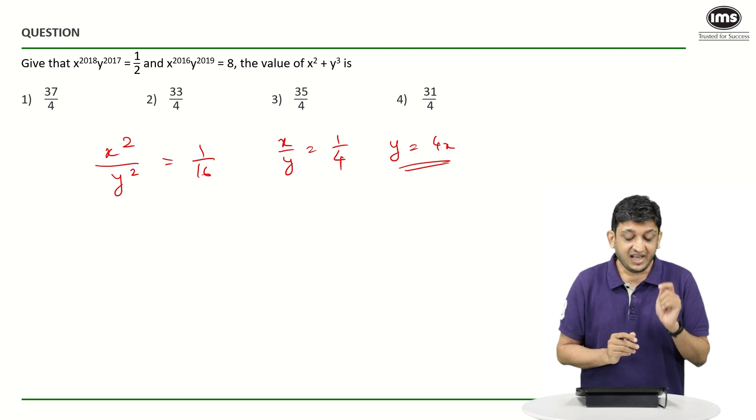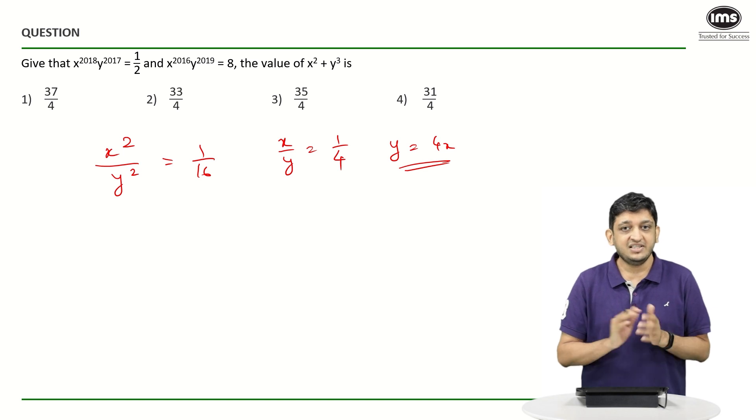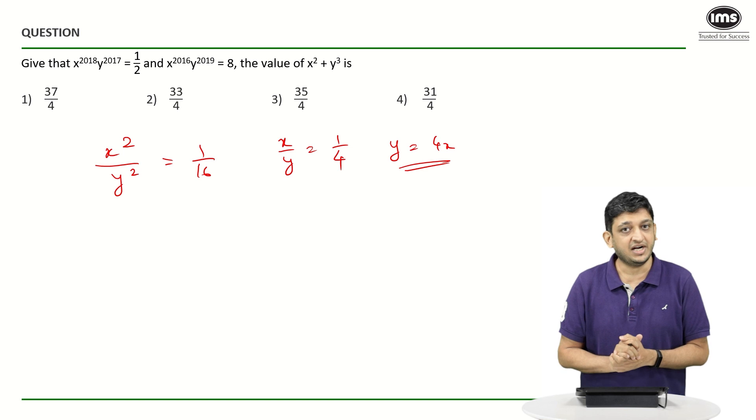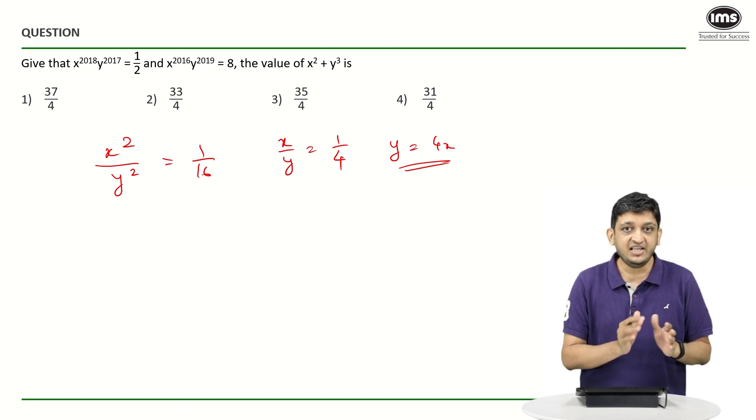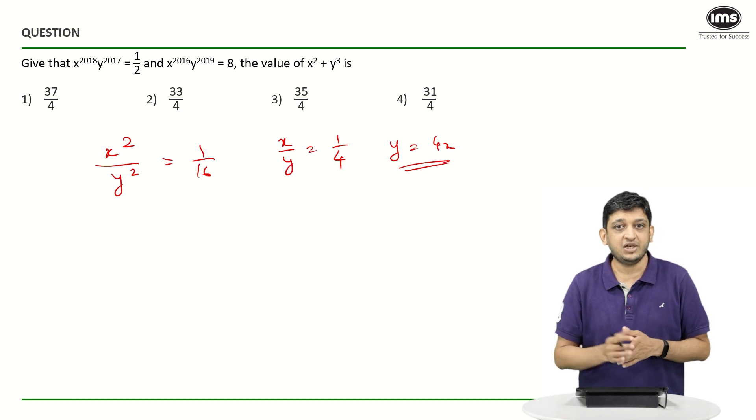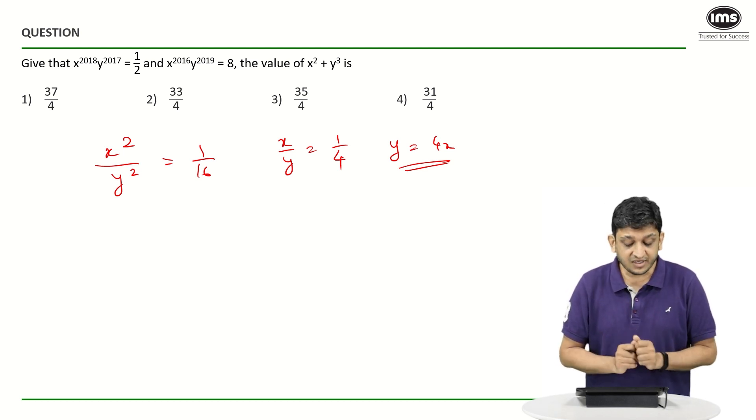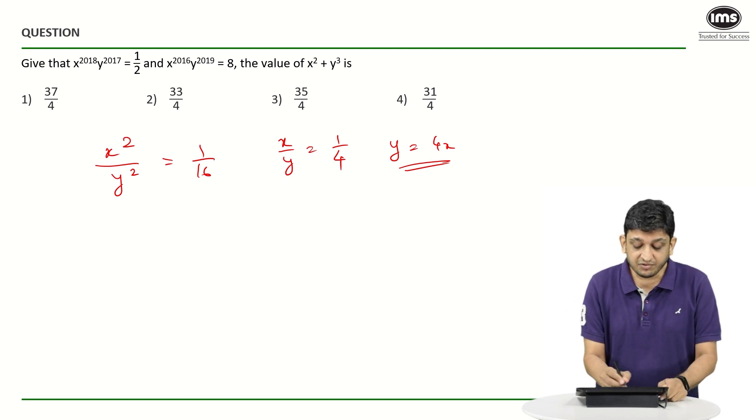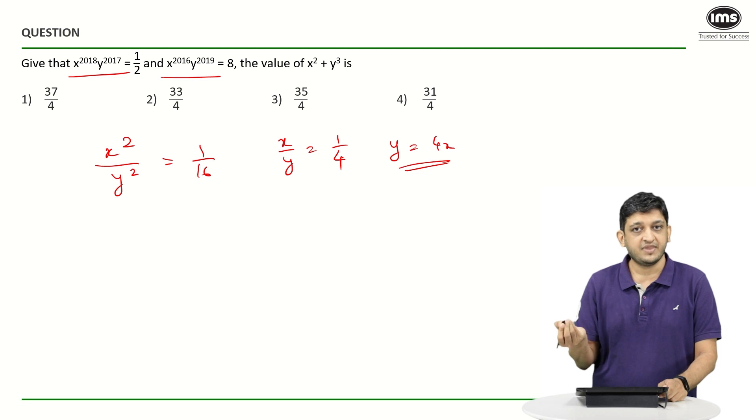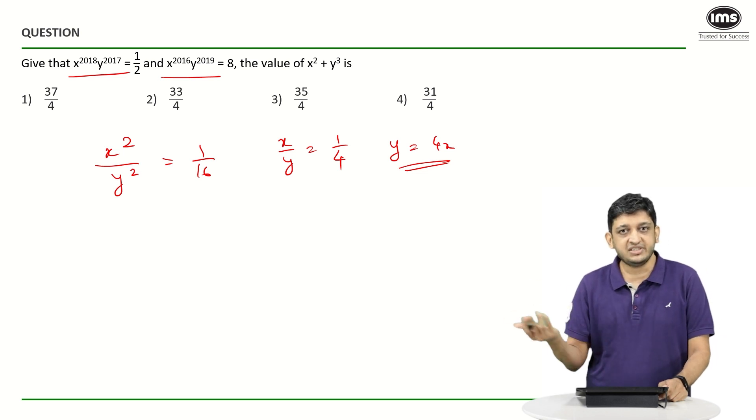For now let's go ahead with Y equals 4X. The good thing about this is we have to find the value of X square plus Y cube, and because X square is going to happen, the value of X being positive or negative is not going to impact our solution at all. So let's say Y equals 4X. What we can do is plug in the value of Y equal to 4X in either of these equations. I would go for the second equation because it is equal to an integer.